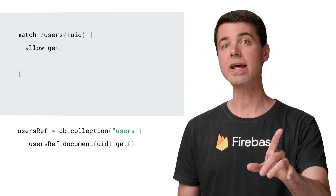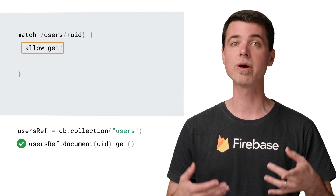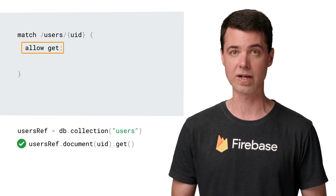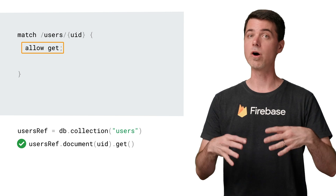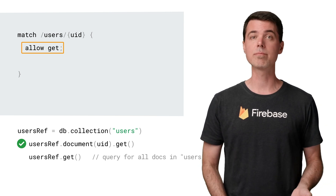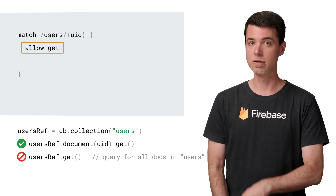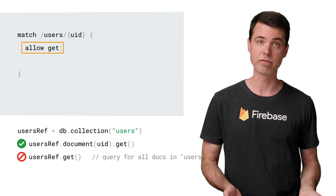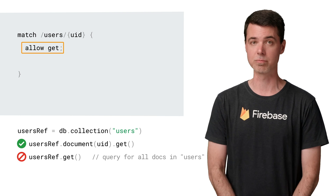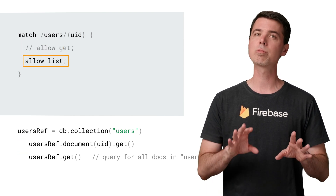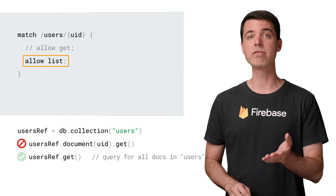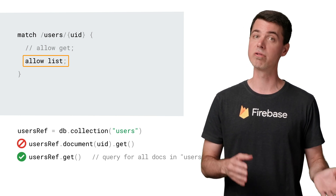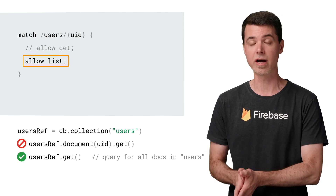Here's how it works. With get access, a client is able to request a single matching document using the get operation on a document reference when using the client SDK. However, with only get permission, clients can't perform queries on the collection. You can see here that a query for all documents in the user's collection using the collection reference is going to fail with these rules in place. Now, if list permission is allowed, a client is able to query and filter the documents matched by the rule. Denying get access also prevents clients from individually fetching a document by its ID.